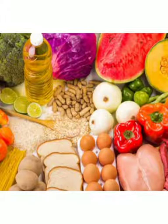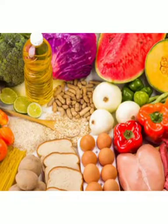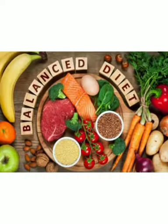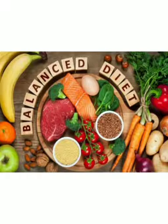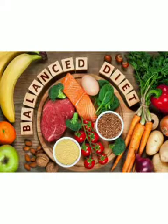The food we eat is called diet — غذا. A diet that contains all nutrients — proteins, vitamins, minerals, carbohydrates — in the right quantity is called a balanced diet — متوازن غذا. A balanced diet is one that has all nutrients present in the correct proportion.